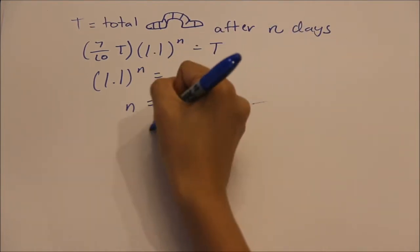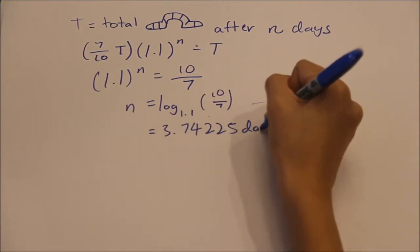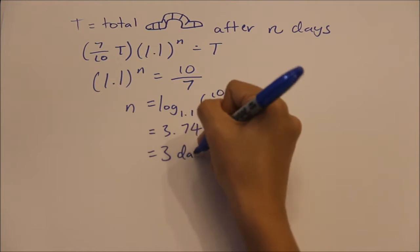Thus we know that we need to spray one round of insecticide every 3.74225 days to not have a net change in number of cutworms. And so the pesticide should be sprayed every 3 days and 17 hours.